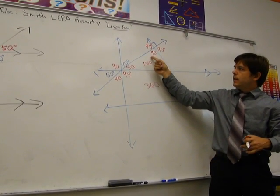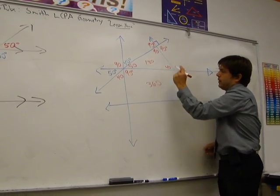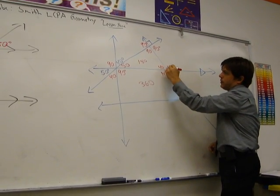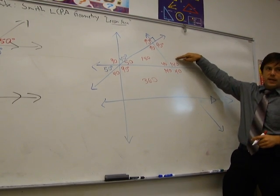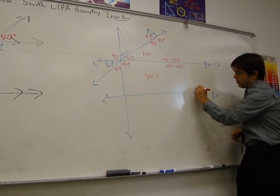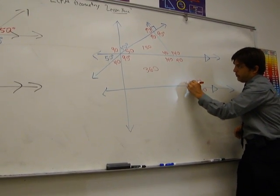50 plus 90 is 140. So this one must be 40. If this is 40, then by vertical angles, this is 40. And by linear pairs, this is 140. And this is 140. And look at this. We have parallel lines. So corresponding angles like this one and this one, which are corresponding, will be congruent. So this one would be 140. And by vertical, this one's 140. By linear pairs, this one's 40. By linear pairs, this one's 40.